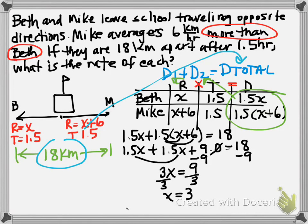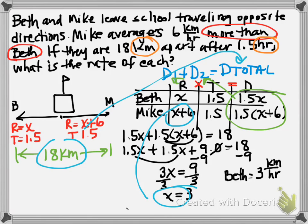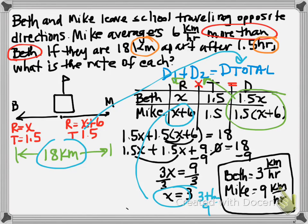So x represents Beth's rate. So we're going to say Beth equals 3. Now we need to create a rate label. So we look at the labels that they used for distance and for time. And that's going to become our label, kilometers per hour. To get Mike's time, we are going to plug back into his definition. So we have 3 plus 6 equals 9. And so we can write his answer is Mike equals 9 kilometers per hour. And those are the two answers.